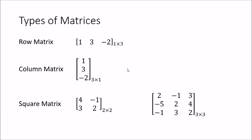One of the more important types is the square matrix. In a square matrix the dimensions are equal to each other — the number of rows equals the number of columns. For example, a 2 by 2 matrix has two rows and two columns, and similarly a 3 by 3 matrix has three rows and three columns.